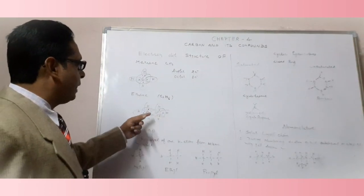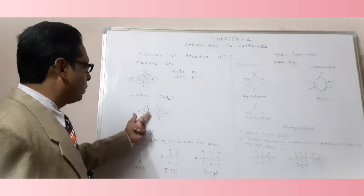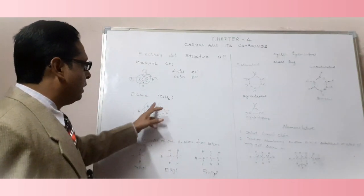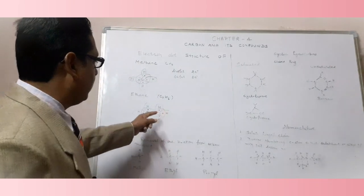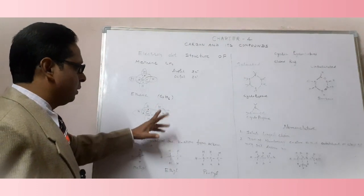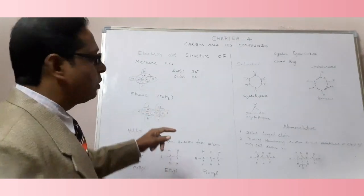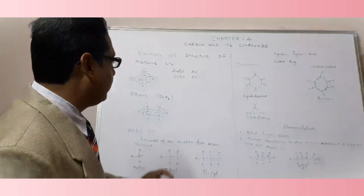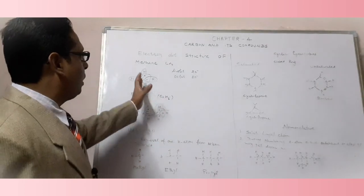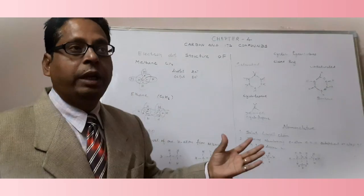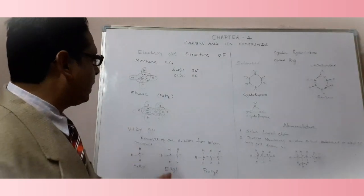Similarly, we can discuss ethane, having the formula C2H6. We have two carbon atoms, each with four valencies shown as dots. Each hydrogen is shown by one cross. In this way, each hydrogen completes its duplet and each carbon atom completes its octet.